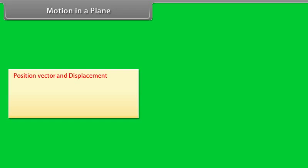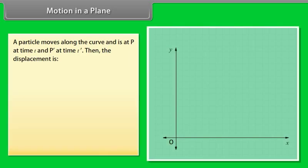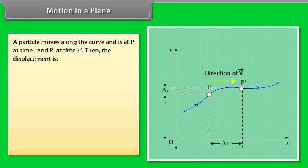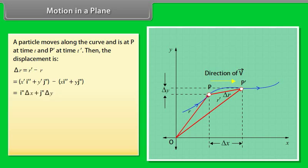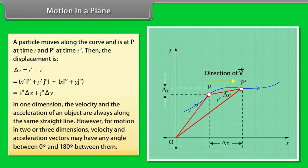Motion in a plane using vectors — position vector and displacement: the position vector r⃗ of a particle P located in a plane with reference to the origin of an xy reference frame is given by r⃗ = x î + y ĵ. A particle moves along a curve and is at P at time t and P′ at time t′. The displacement is Δr⃗ = r⃗′ − r⃗ = î Δx + ĵ Δy. In two or three dimensions, velocity and acceleration vectors may have any angle between 0° and 180° between them.